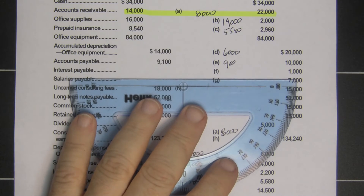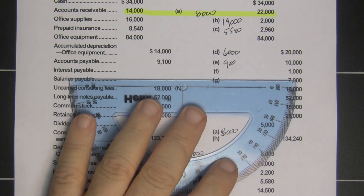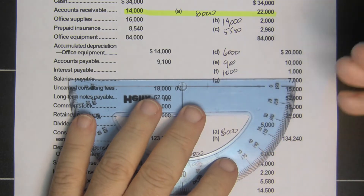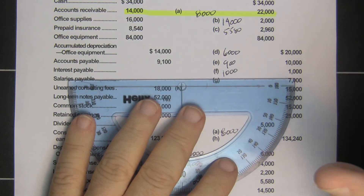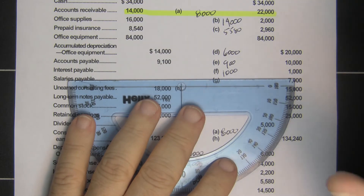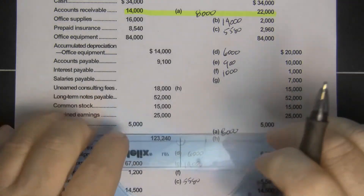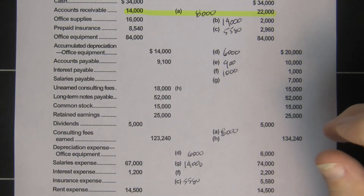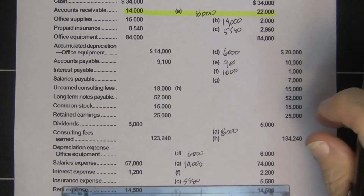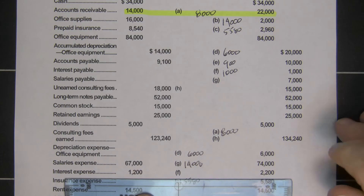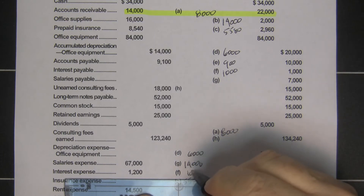Interest payable was zero and is now a thousand dollars. That means we borrowed money or bought equipment on account — we did some credit transaction but didn't pay the interest yet, so that's a thousand dollars. Looking below for interest expense, it did indeed go up exactly one thousand dollars.